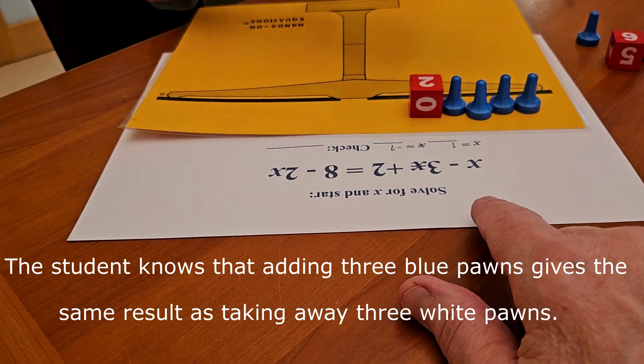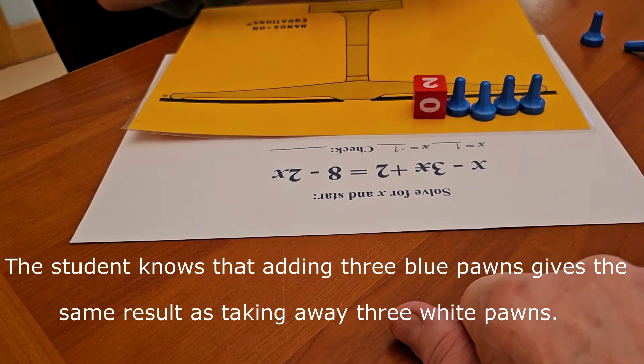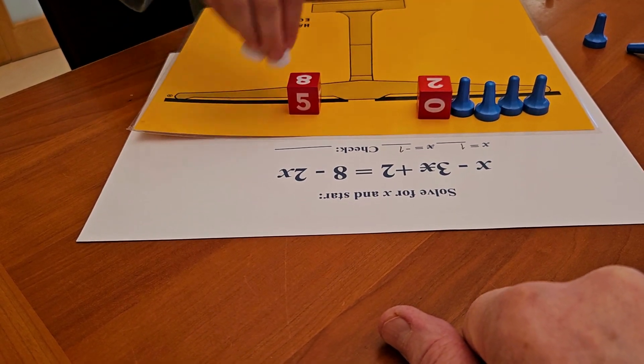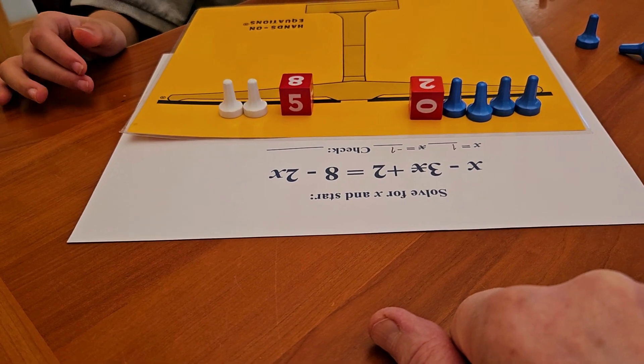So you're adding three Xs plus two. And the other side, you have eight. Take away two X. The end result would be to add two stars.